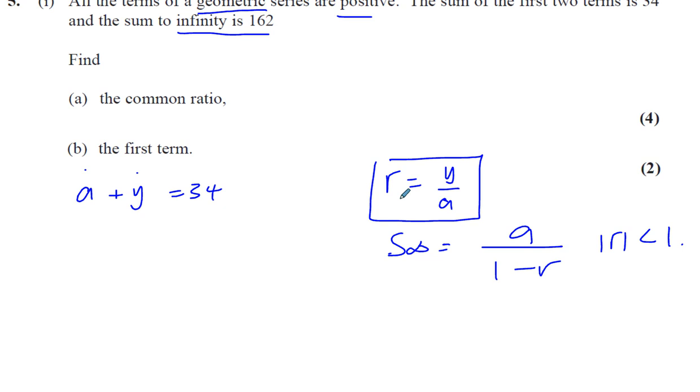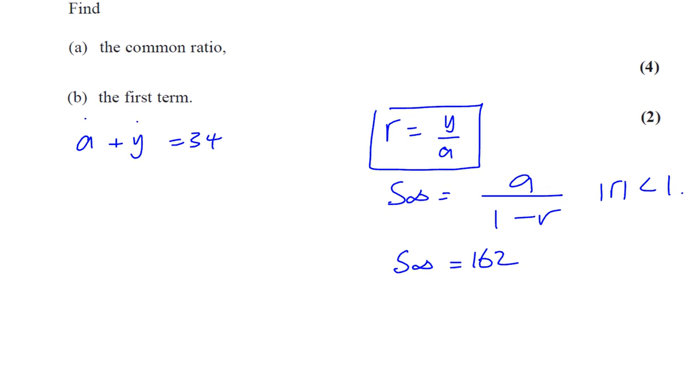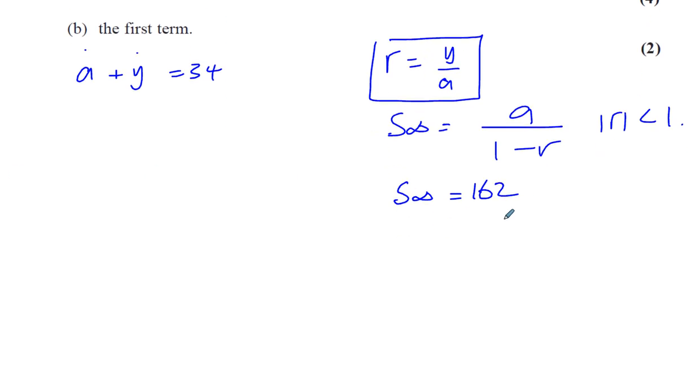So what I could do here, and we know the sum to infinity is 162. So let's try and link all these bits of information together. Here I can say Y is equal to 34 minus A. So I've expressed Y in terms of A.